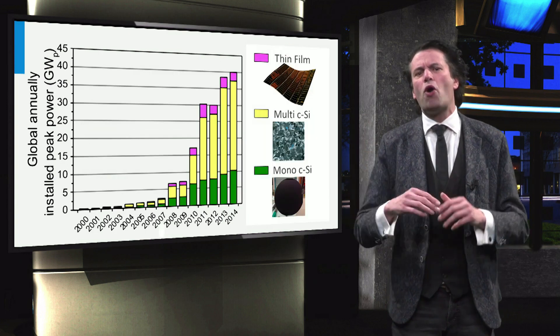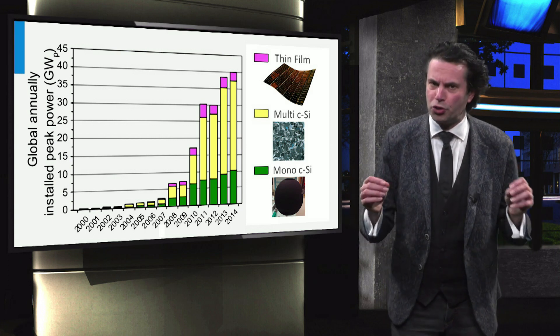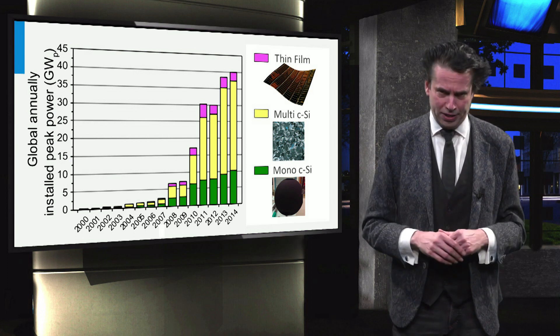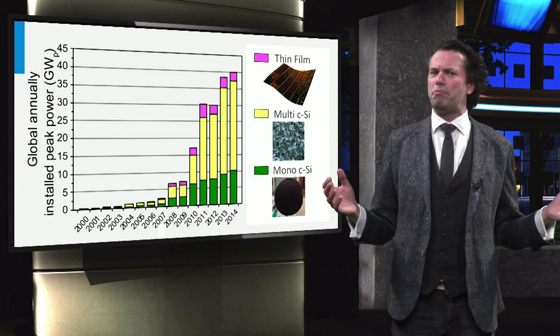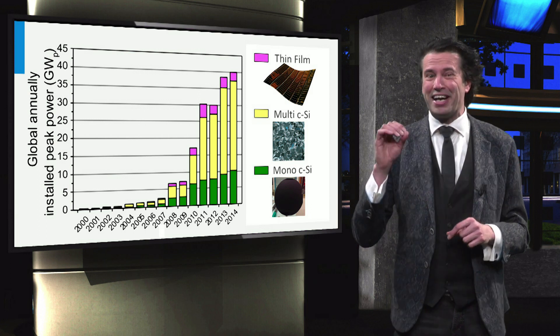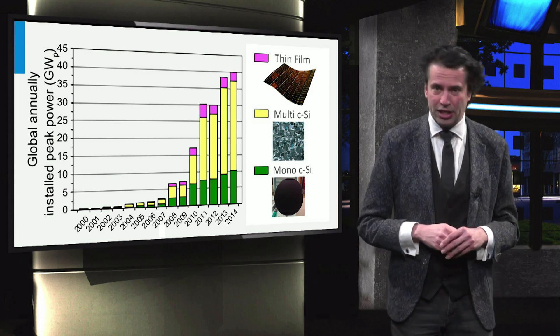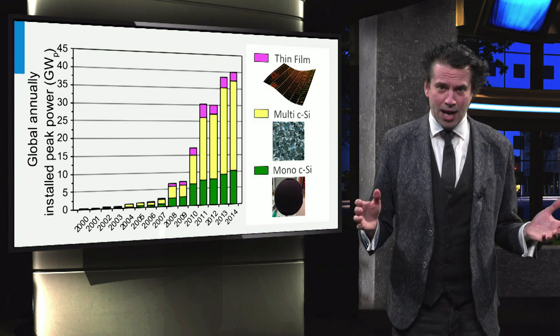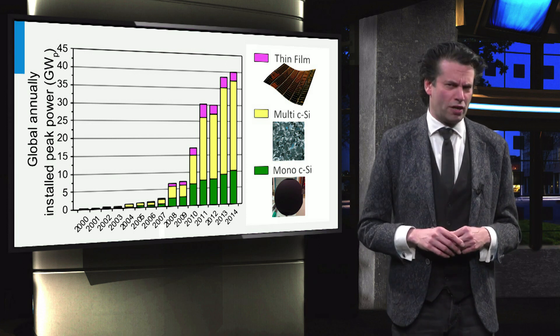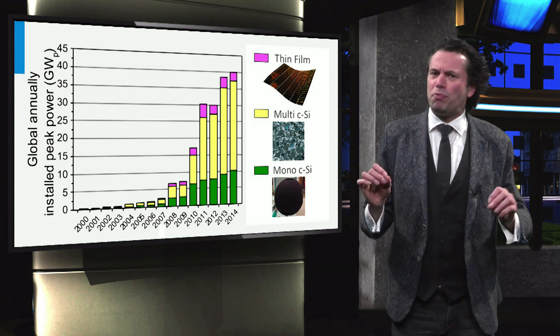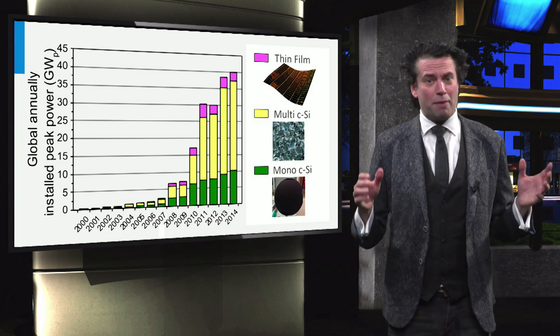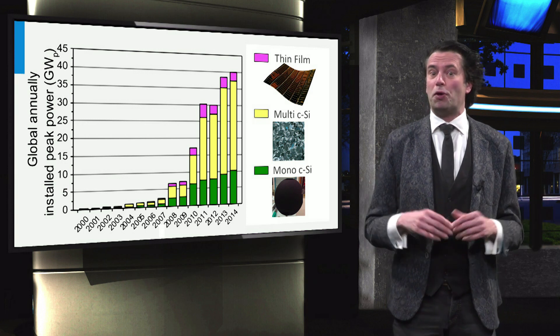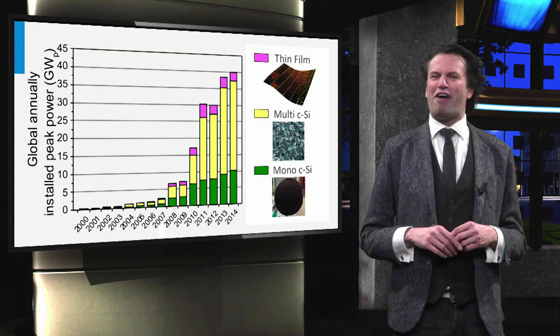In this graph I show how the various PV technologies contribute to the total annual global module production. The green and yellow colors represent the crystalline silicon PV technology. As you can see, crystalline silicon is the dominant technology and contributes to around 90% of the total module production in 2017. The pink color corresponds to the inorganic thin film PV technologies like amorphous silicon, cadmium telluride and CIGS. These thin film technologies are responsible for the remaining few percent.